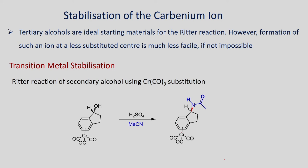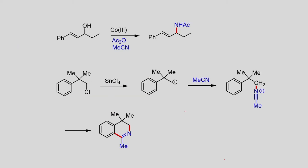In this substrate, the chromium tricarbonyl stabilizes the carbocation intermediate to facilitate the reaction. This slide shows the reaction of a secondary alcohol into amide in the presence of cobalt(II) chloride, acetic anhydride, and acetonitrile. In this reaction, first the allylic alcohol is converted into acetate, and then it further reacts with acetonitrile to give the amide as a product.